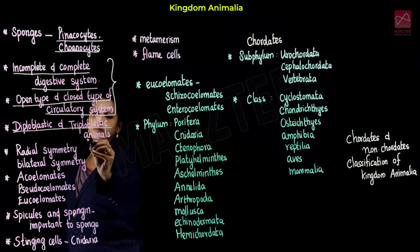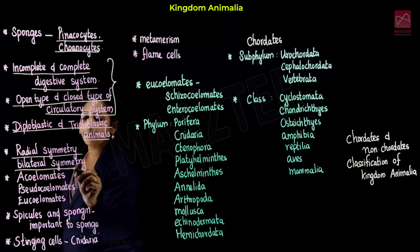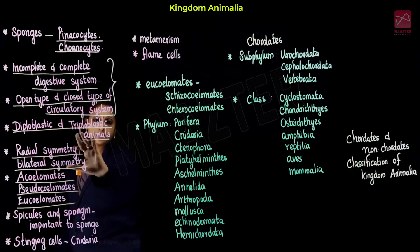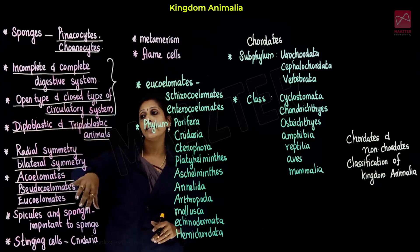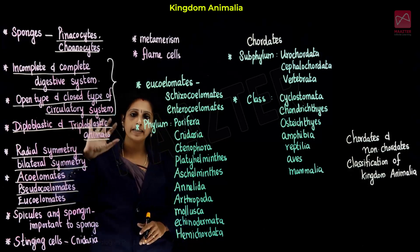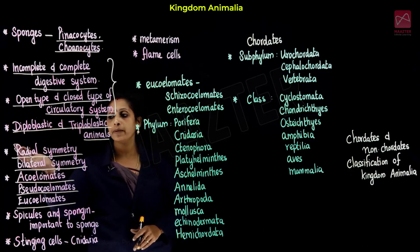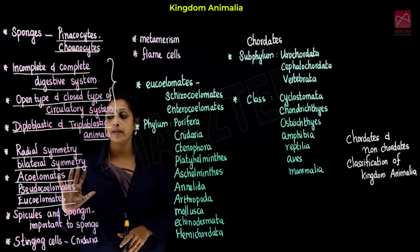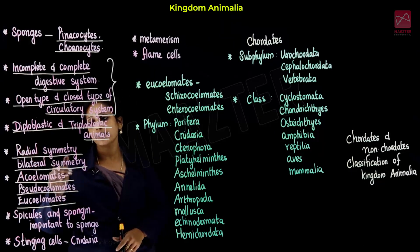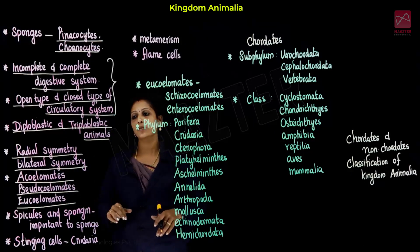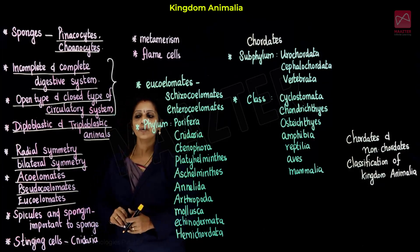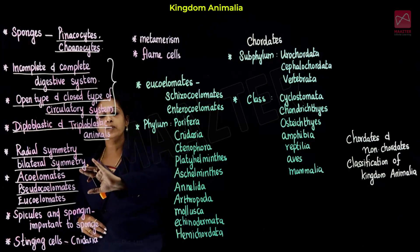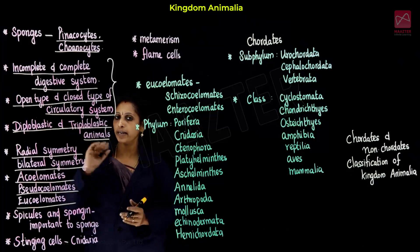Diploblastic and triploblastic animals, then radial symmetry and bilateral symmetry, acoelomates, pseudo-coelomates, eucoelomates. What is meant by diploblastic animal? What is meant by triploblastic animal? What is meant by radial symmetry? What is meant by differentiation? Differentiate diploblastic and triploblastic animals. Differentiate radial symmetry and bilateral symmetry. That's why we need to study in this section. Differentiates — disclaimer and update are also what we can do.